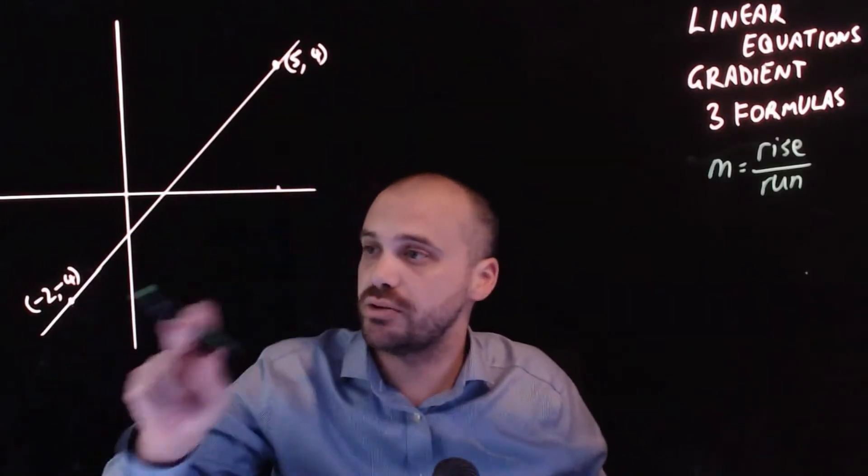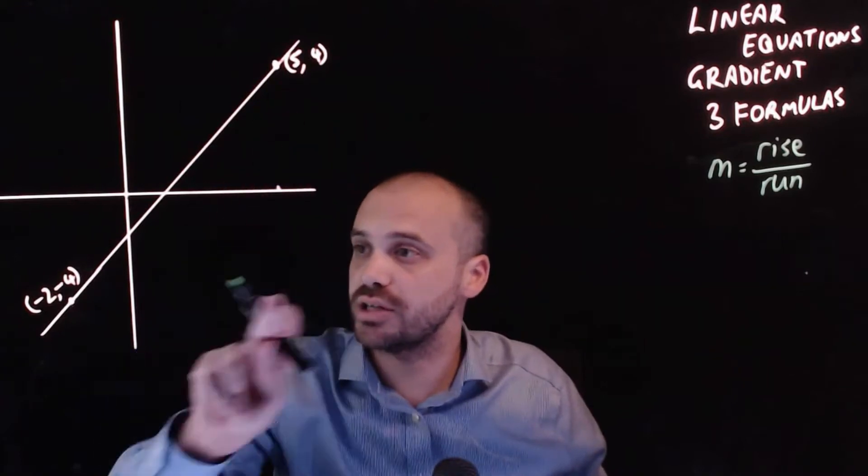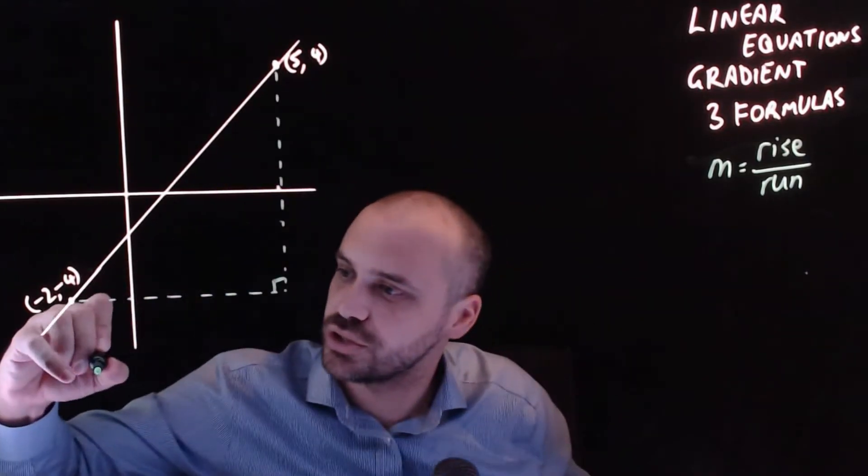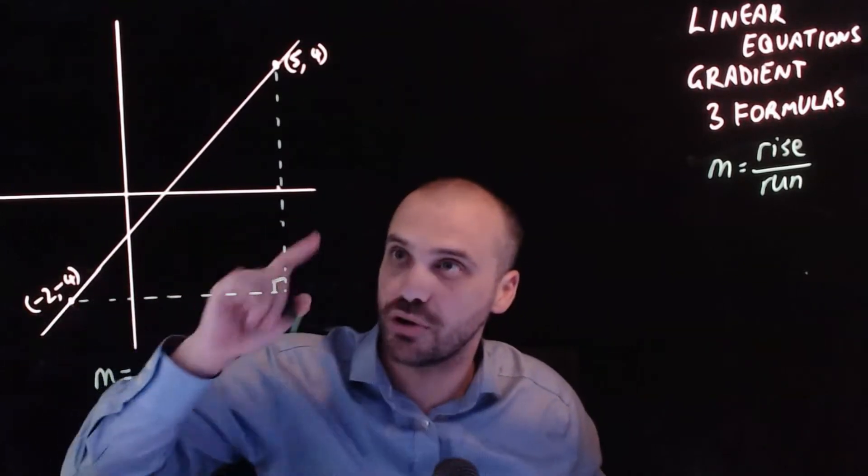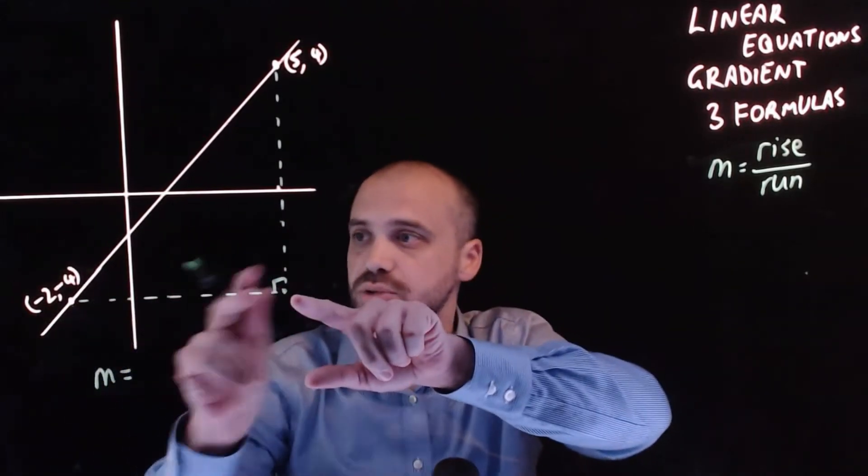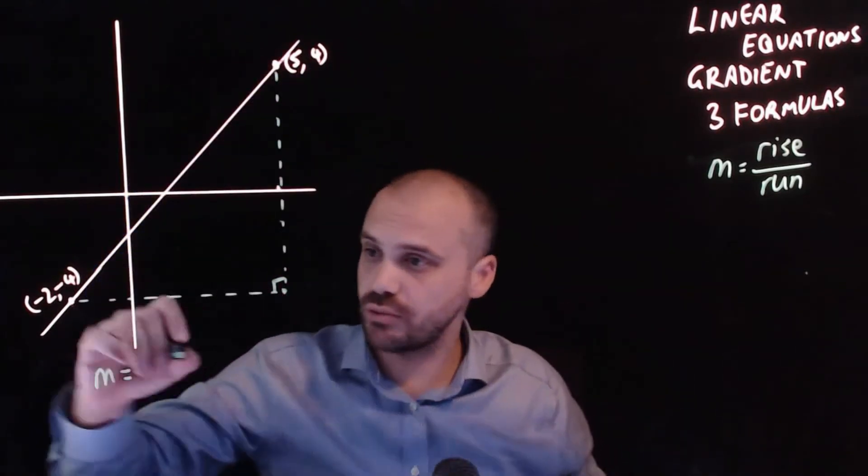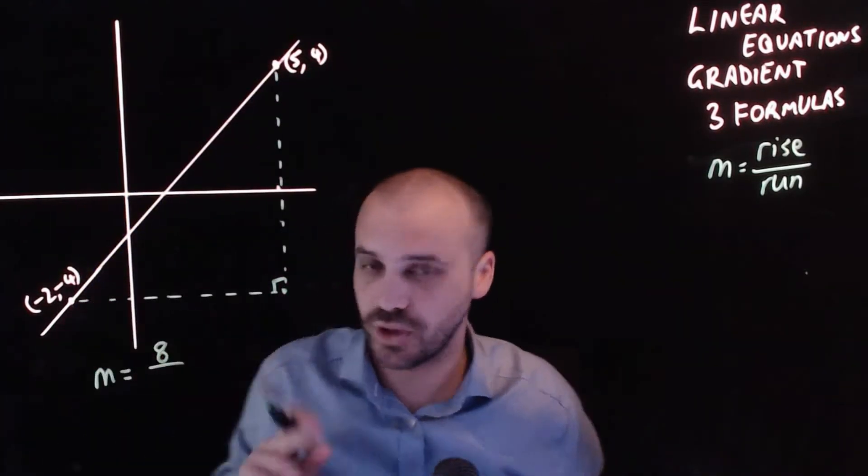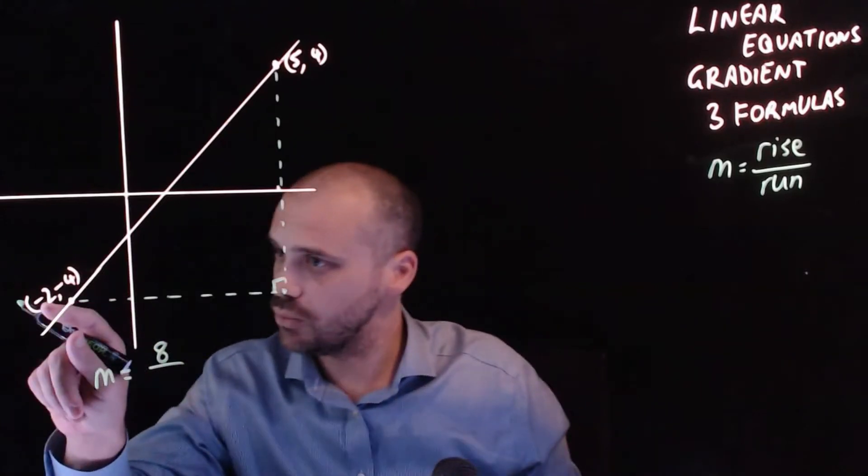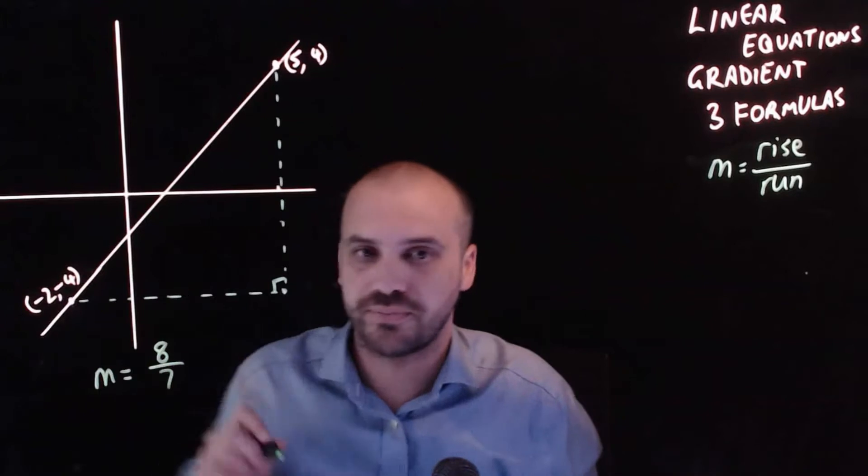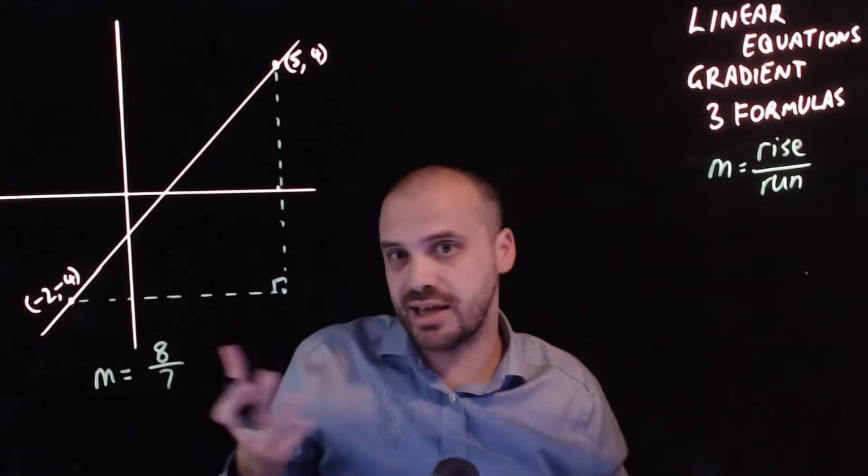So if I've got my two points here and here I can draw a right angle triangle here and if I want to find the gradient of this I just do m equals rise. Now how far up did we go? We went from negative four up to positive four. So we've got a rise here of eight over a run. We went from negative two to five.